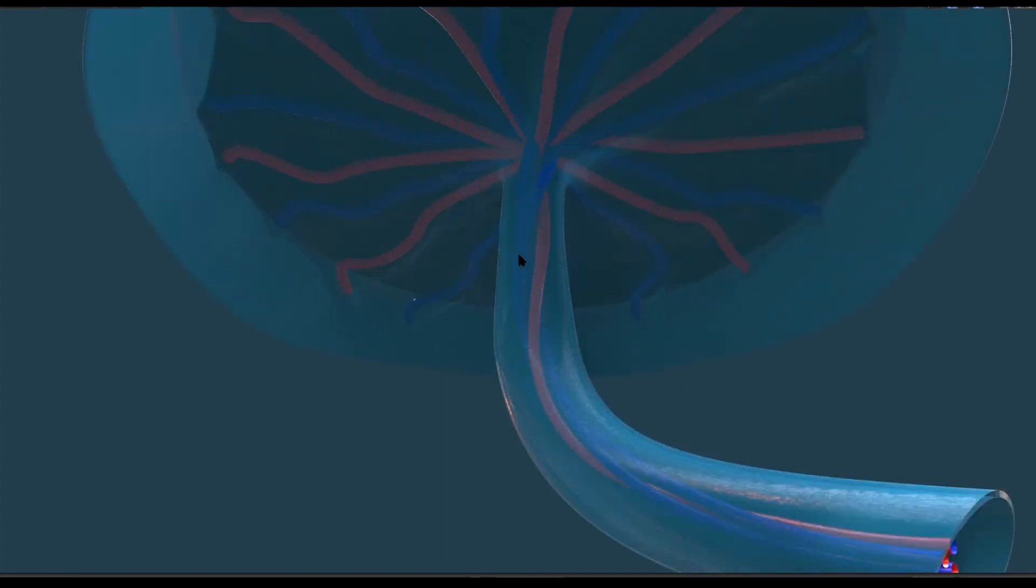Please note that umbilical arteries are denoted by blue color because they contain less oxygenated blood, and similarly the umbilical vein is denoted by red color because interestingly it contains highly oxygenated blood.